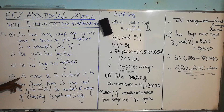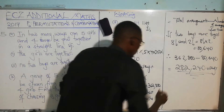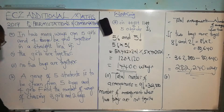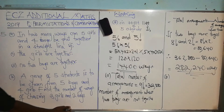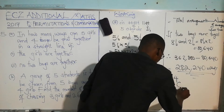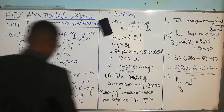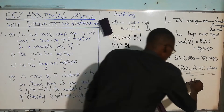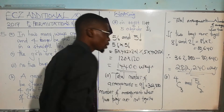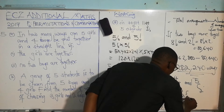Coming to part B: a group of five students is to be chosen from five boys and four girls — find the number of ways of choosing three girls and two boys. This is a combination problem. The number of ways = C(4,3) × C(5,2), choosing three girls from four and two boys from five.